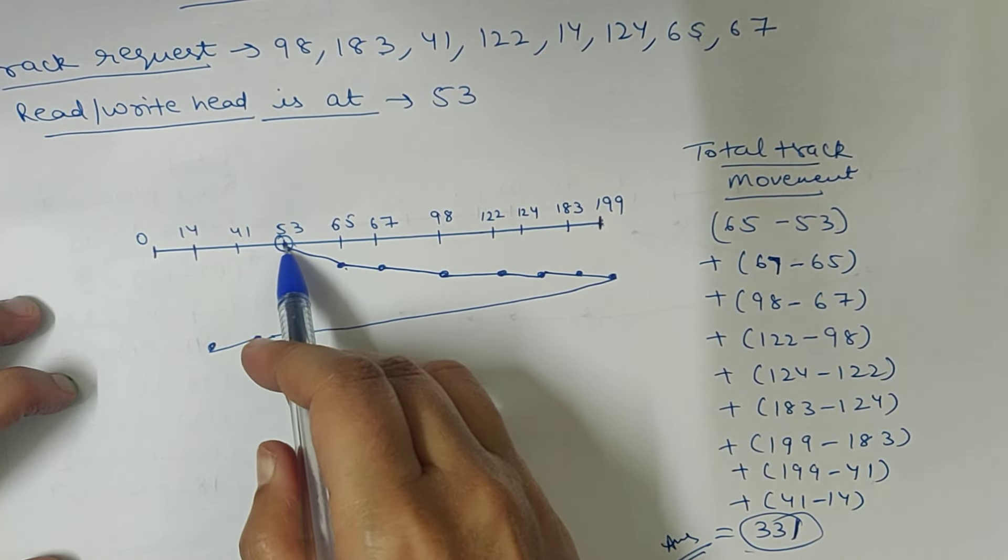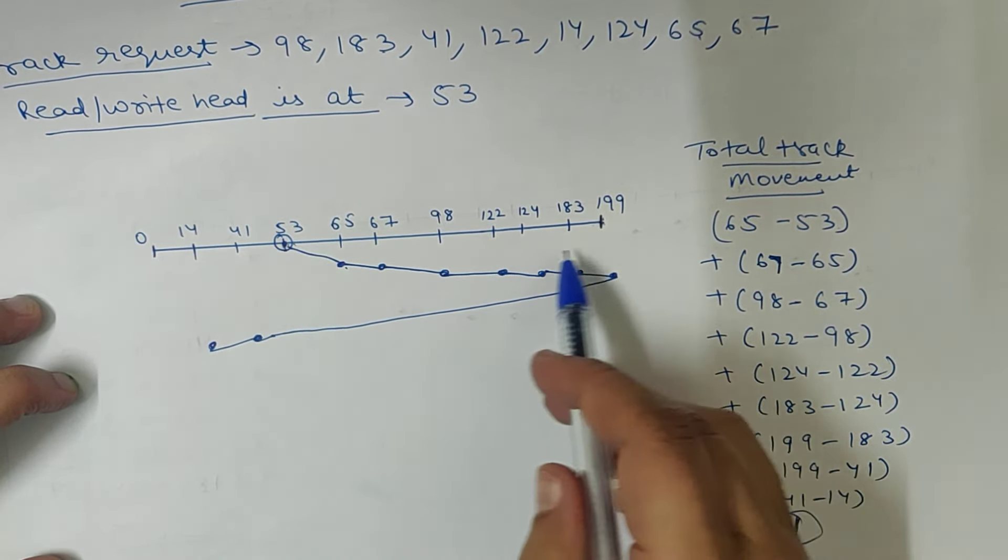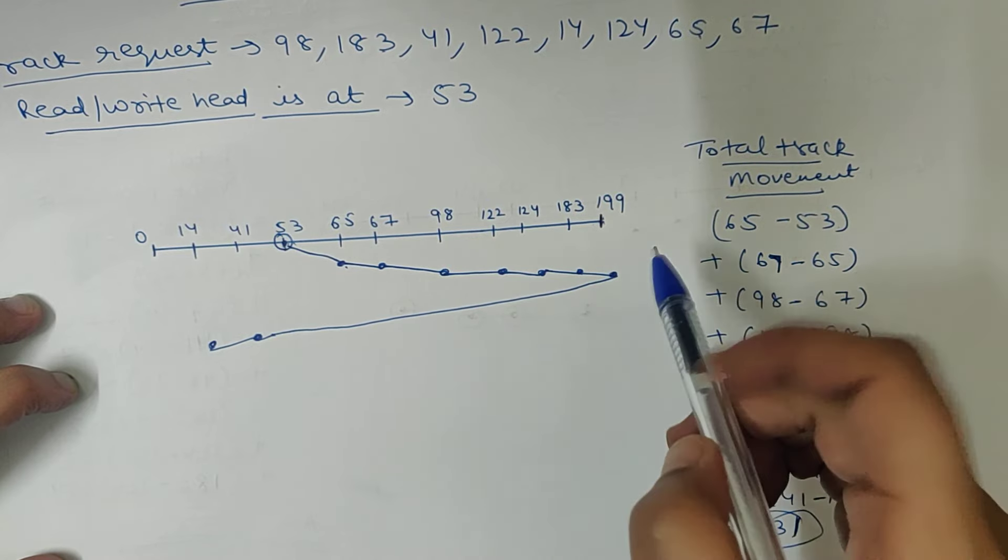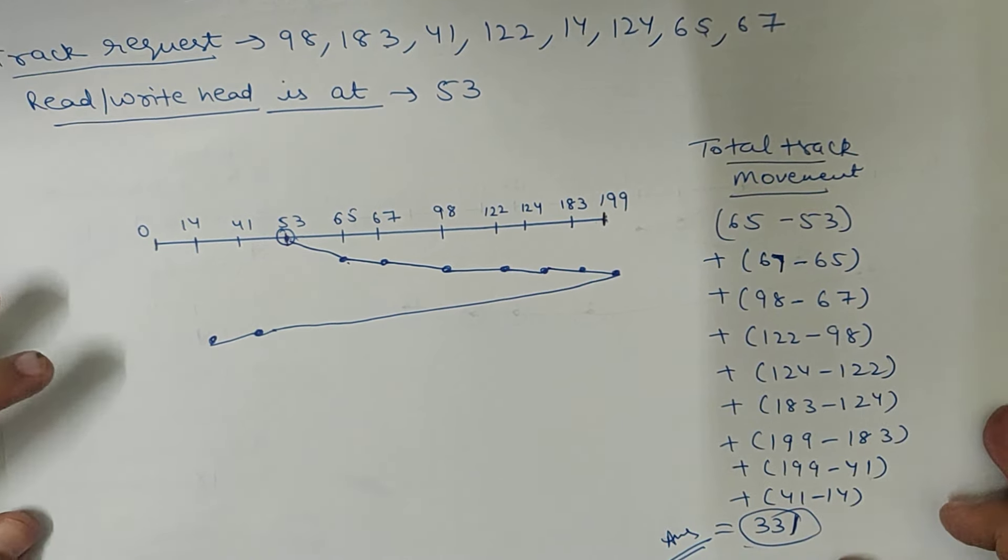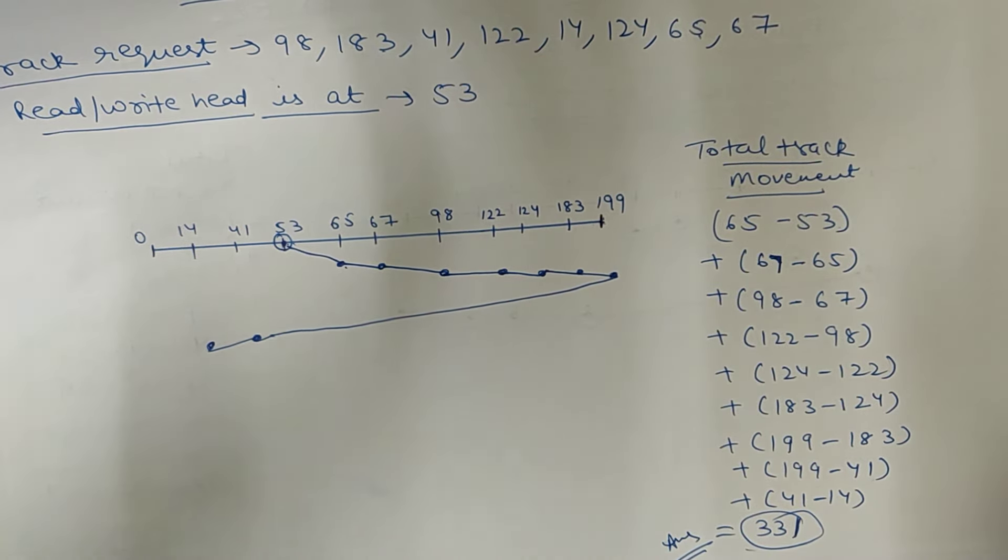What do we scan? Where you have the read-write head, where you have the request, from there you have to go to the last track. Then we will go to reverse which request is fulfilled. Thanks for watching my video.